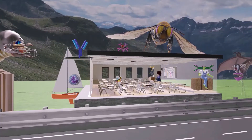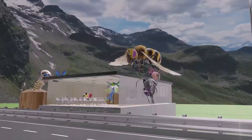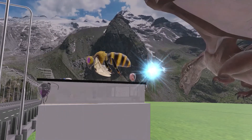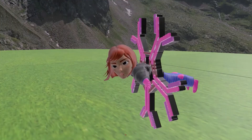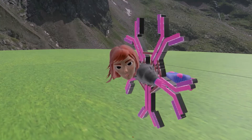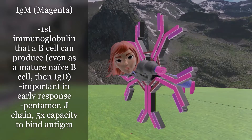Let me describe to you what each of these immunoglobulins did. As the story unfolds, I'm going to explain what the various elements represent. So it all begins with IgM, represented by this magenta IgM character. The reason we're beginning with this one is because IgM is the first immunoglobulin that a B cell can produce. In fact, a B cell expresses IgM even before being activated — that is, when it's still a mature naive B cell.